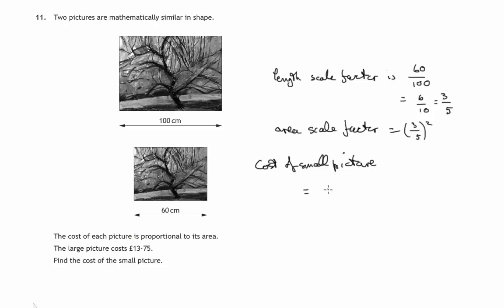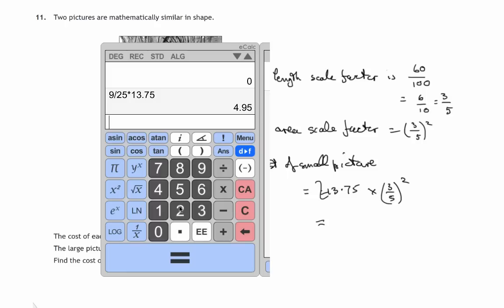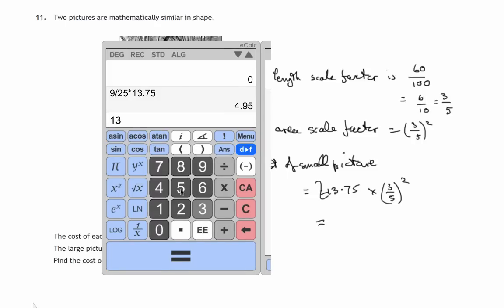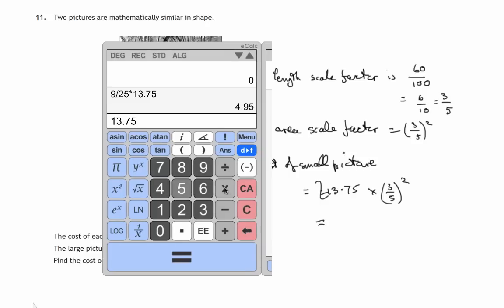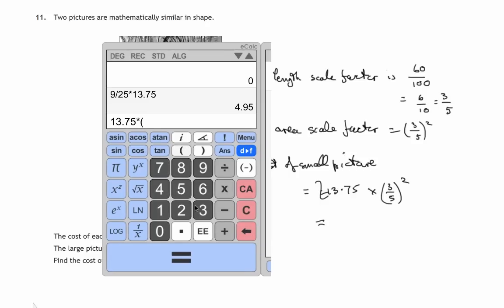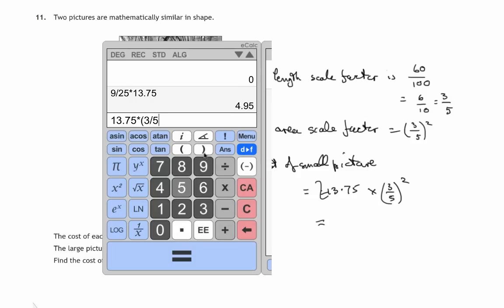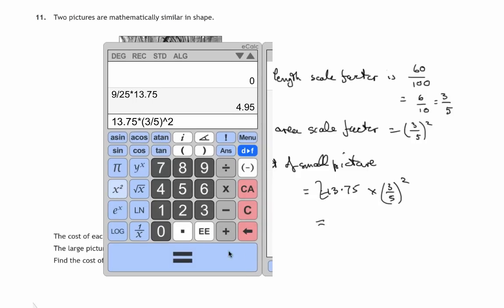If we have a look at that, 13.75 times three fifths squared, and again we'll get £4.95 as we did previously.